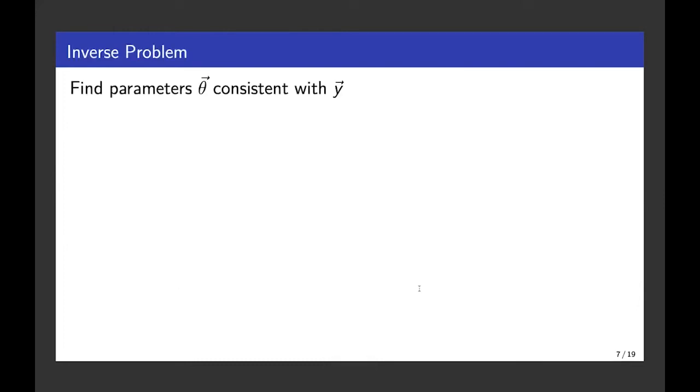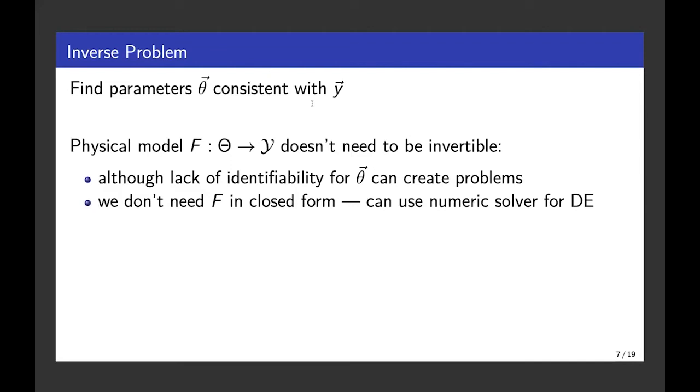So an inverse problem is where we're trying to find the parameter values - and here I'm just using a vector theta - that are consistent with our observations y. And our physical model then doesn't need to be invertible. So although it's called an inverse problem, we never actually invert this function f. Although there is an issue with identifiability of our parameters, which can then lead to multimodality in our distribution of those parameters. But there is current research in how to address this issue of multimodality, and that's one of the things I've been working on and I plan to work on in TIDE.